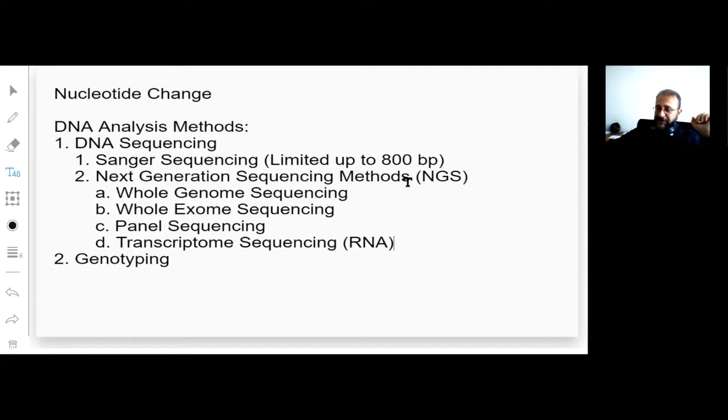But in next generation sequencing methods, you use directly the genomic DNA without need for specific cloning or a specific PCR. And with next generation sequencing, you can read the sequence of whole genome, or you can read only the coding regions, but coding regions of all genes. All exons of all genes.